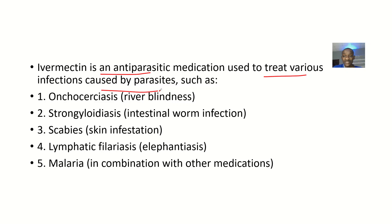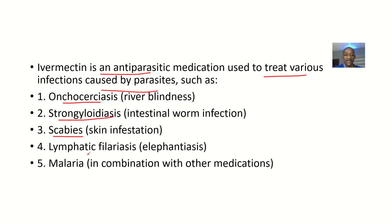Examples of these infections include onchocerciasis, also known as river blindness. It also has an effect on strongyloidiasis, which is an intestinal worm infection, an effect on scabies — that's a skin infection — and an effect on lymphatic filariasis, also known as elephantiasis.